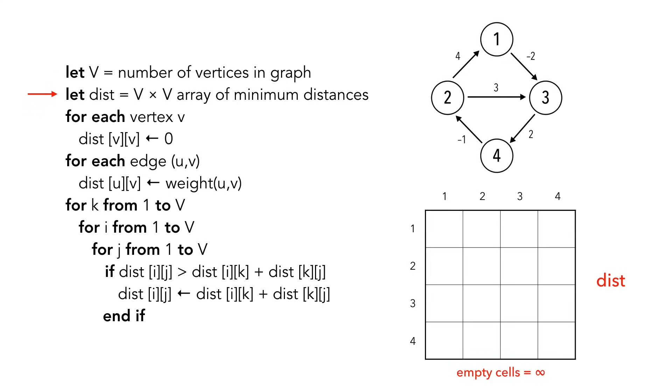We create a distance array that keeps track of the shortest path between nodes. For example, row 3, column 4 will store the shortest path from node 3 to node 4. Let's initialize each node's path to itself to 0.